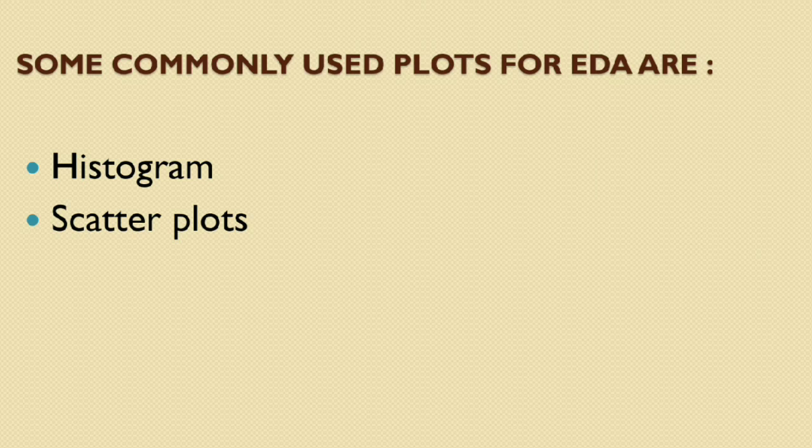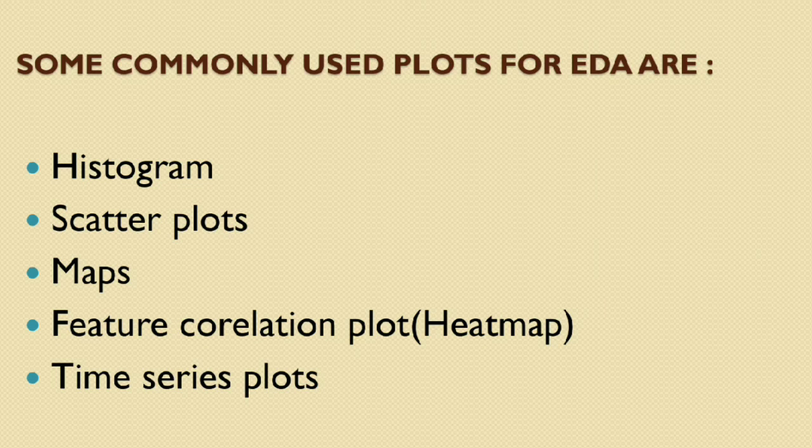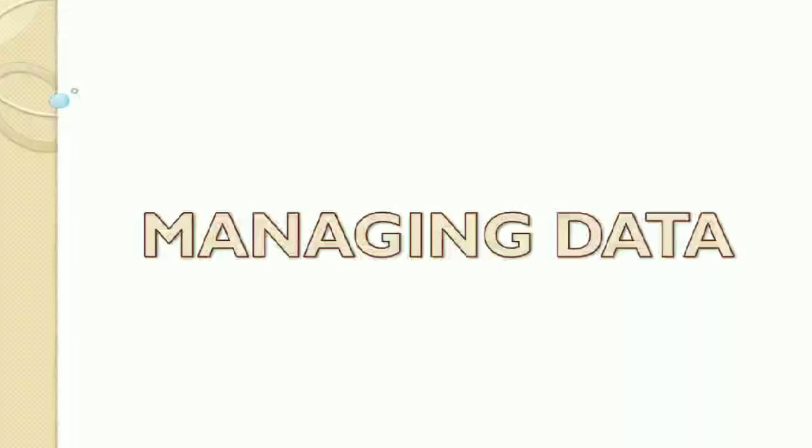Some commonly used plots for EDA are: Histogram is used to check the distribution of phases of data specific variable. Scatter plot is used to check the dependency between two variables. Map to show distribution of a variable on a regional or world map. Feature correlation plot or heat map is to understand the dependencies between multiple variables. Time series plot is to identify trend and seasonality in time dependent data.